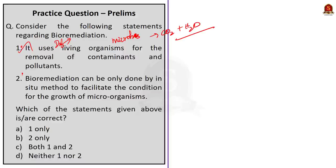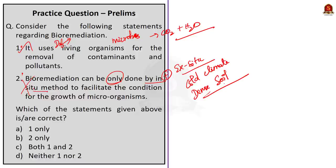Bioremediation can be only done by in situ method to facilitate conditions for growth of a microorganism. This statement is incorrect because we saw in our discussion that bioremediation can be done in two ways that is in situ and ex situ. Ex situ bioremediation may be necessary if the climate condition is too cold to sustain microbial activity or if the soil is too dense for nutrients to distribute evenly. So, the second statement is incorrect. Since the statement 1 is correct and the statement 2 is incorrect, the correct option here is option A, one only.